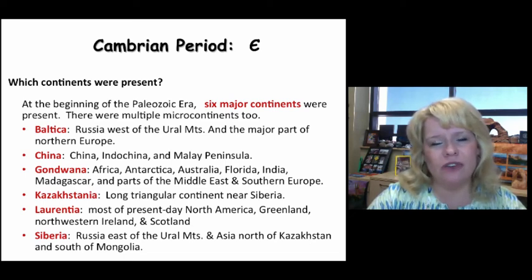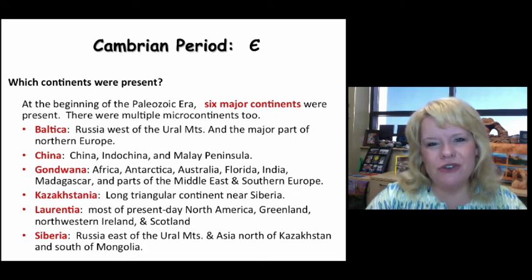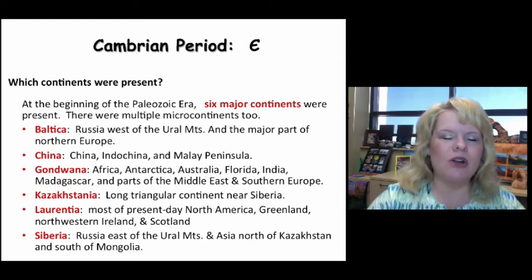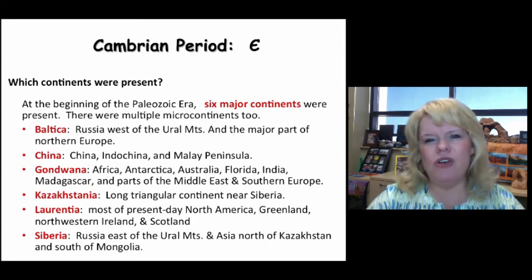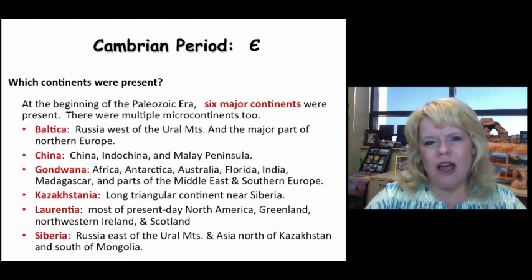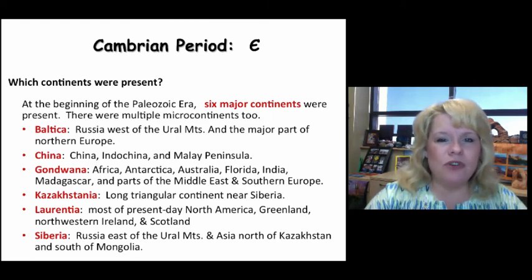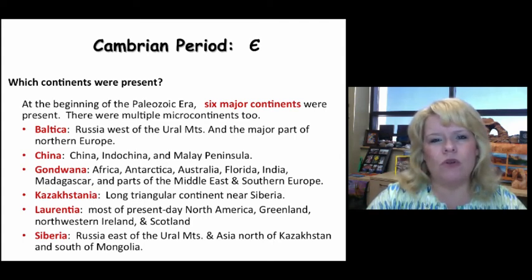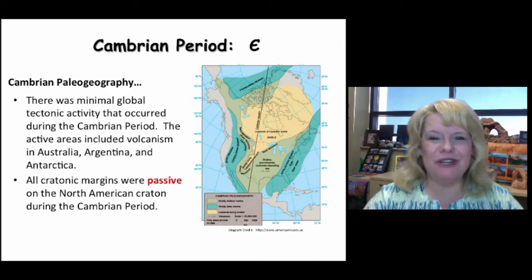Starting by the Triassic, certainly by the end of the Triassic into the Jurassic, the theme is just the opposite — split them all apart. If you bring a supercontinent together, you split it back up. So each period will have two segments that we cover: the paleogeographic information — where are the continents located — and number two, what were the life forms of that timeframe. During the paleogeographic discussion, we'll talk about applicable orogenies, which are mountain building events, important rifting, and important landscapes that existed at that time.